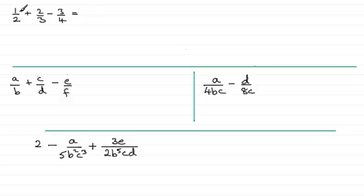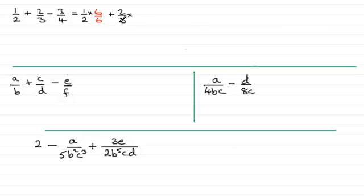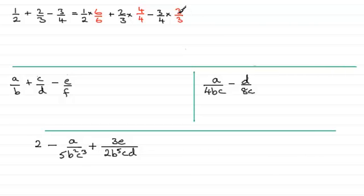So if we take the first fraction, one-half, we can turn it into twelfths by multiplying top and bottom by six. Multiplying top and bottom by the same value is like multiplying by one, so it still remains as a half but ends up being six over twelve — six twelfths being that half. For the next fraction, plus two-thirds, to turn that into twelfths I need to multiply the denominator three by four, and if I multiply the denominator by four I must multiply the numerator by four as well. And lastly for minus three-quarters, I need to multiply the denominator four by three to give twelve, and must multiply the numerator by three as well.